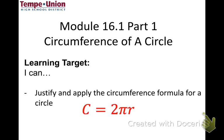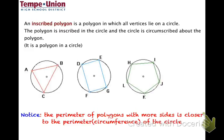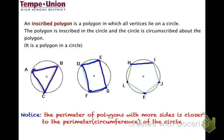If you take a polygon and inscribe it in a circle, that means the vertices of the polygon lie right on the circle. This triangle is inscribed, this quadrilateral is inscribed, and this pentagon is inscribed in a circle. Notice that the perimeter of the polygon gets closer to the perimeter of the circle — the circumference — as we increase the number of sides.